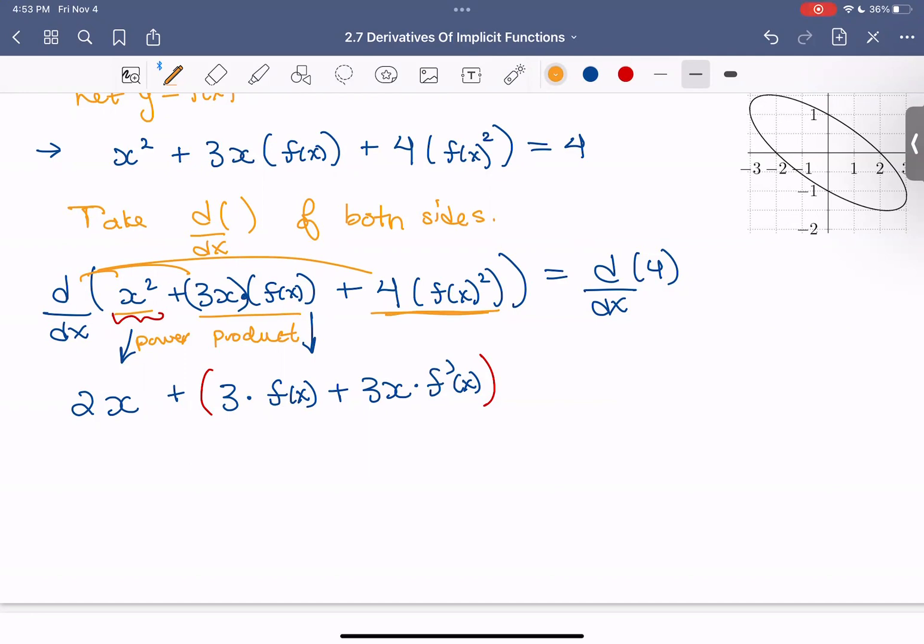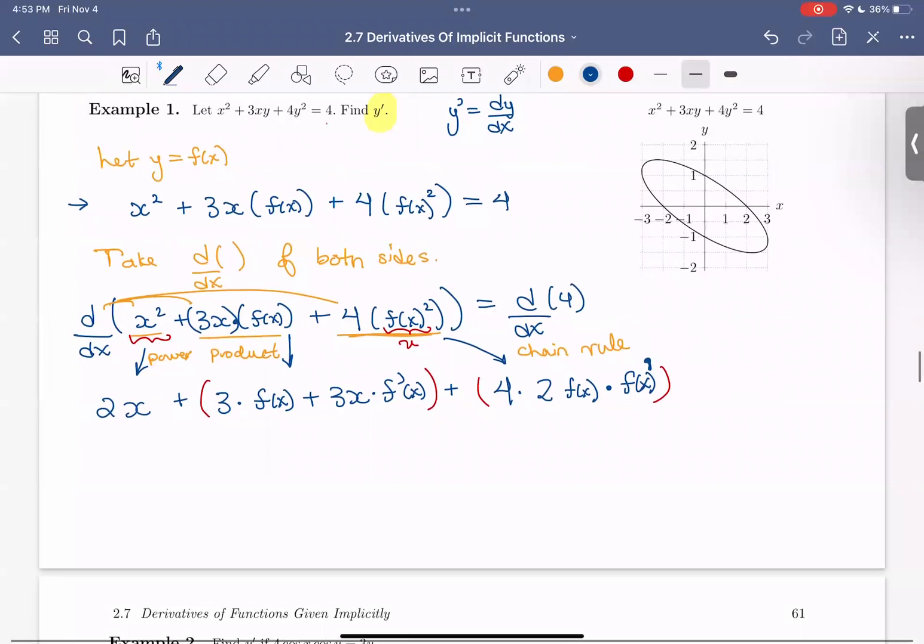So now this last term, I just have 4 f of x squared. So we should recognize this as a composition. I could let f of x equal u here. Again, the more you see of these, the more comfortable you will be taking some shortcuts and not using all the notation. But we see a composition f of x squared, so we need to use the chain rule. So I'm going to use my big parentheses. For that, the 4 is just a constant, so it can come out. So now I take the derivative of the outside function to f of x to the power of 1 times the derivative of the inside function. The inside function is just f, so now I have f prime of x. That's the left-hand side. Now that's all equal to the derivative of 4, which is just 0.